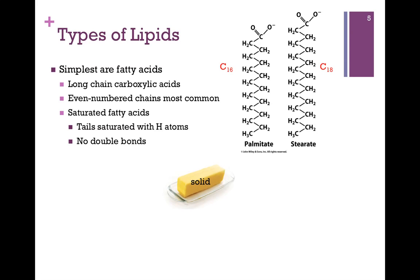We're looking at palmitate on the left — it has 16 carbon atoms in its chain, denoted as C-subscript-16. Stearate on the right has 18 carbon atoms. For palmitate and stearate, you'll notice these are saturated fatty acids — that is, the tails are saturated with hydrogen atoms. They're all single bonds; there are no double bonds.